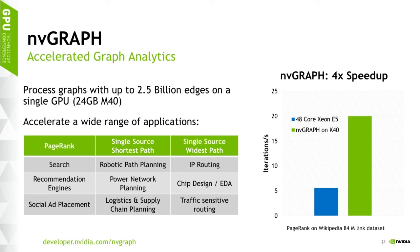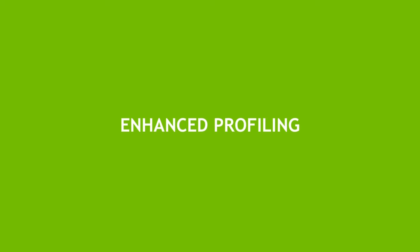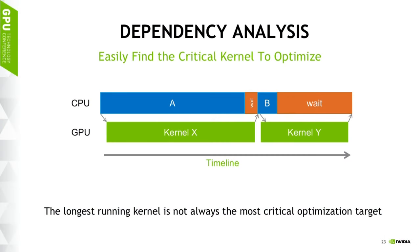The fourth thing is enhanced profiling. Developer tools are really important for your productivity. If you program in CUDA and haven't used the CUDA profiling tools, definitely check them out — they can save you a lot of time and give great insight into your application and how it's using the hardware. One of the big features in the CUDA profiling tools in CUDA 8 is dependency analysis, or critical path analysis. The goal is to find the critical place in your program to optimize to get the most benefit — and that's not always the longest-running kernel.